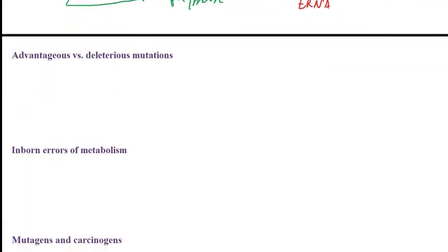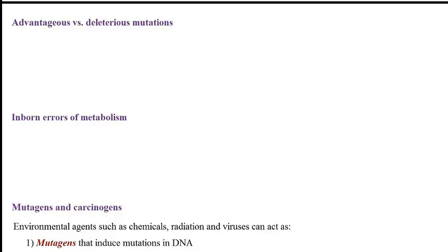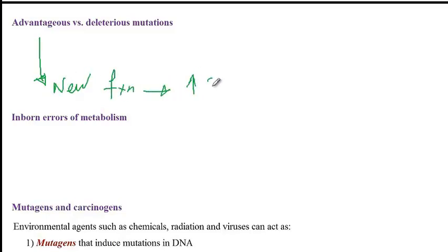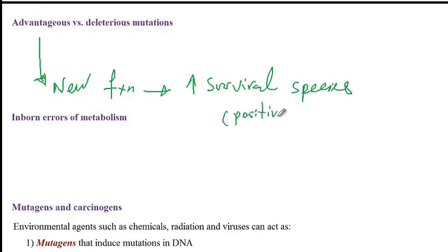Mutations could be advantageous, deleterious, or neutral — for instance, a silent mutation would be neutral. Advantageous mutations provide a new function that increases survival of the species in the population, and so these mutations usually undergo positive selection and the frequency of these genes increases over time.